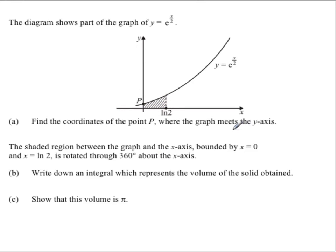But it first asks where the graph meets the y-axis. That's at the y-intercept where x is 0. So e to the 0 over 2 is e to the 0, which is 1. Anything to the 0 is 1, so the y-intercept is 1.